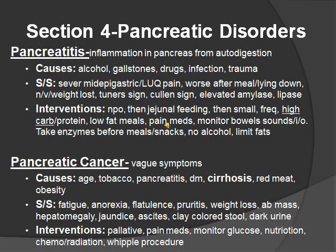Pancreatic cancer presents with vague signs, so it's usually diagnosed late — causing a high mortality rate. Causes: age, tobacco, pancreatitis, diabetes, cirrhosis, red meat, and obesity. Signs and symptoms: fatigue, anorexia, passing gas, pruritus, weight loss, abdominal mass, hepatomegaly, jaundice, ascites, clay-colored stool, dark urine. Interventions: palliative care, pain medication, monitor glucose, nutrition, chemotherapy, radiation, and the Whipple procedure — which is performed to remove cancer on the head of the pancreas.